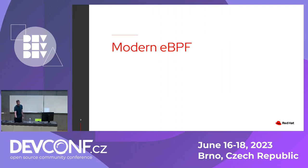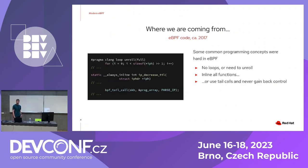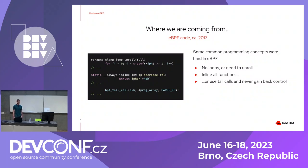Let's talk about modern eBPF. I want to illustrate this with a few examples using code snippets from the samples in the Linux kernel tree. First, eBPF a while ago didn't have any loops — you could not write loops like in any normal programming language. The only exception was asking your compiler to unroll the loop, which copies the loop body one after another. That increases code size and requires an upper bound known at compile time.